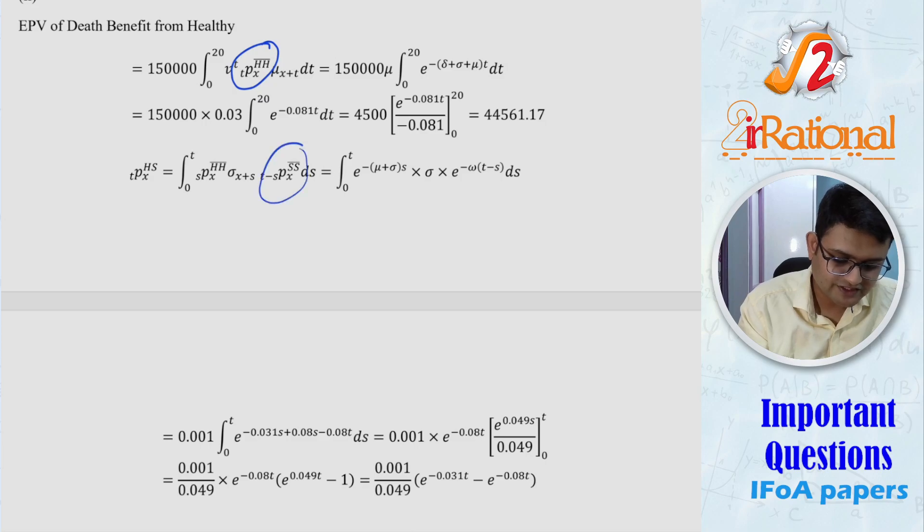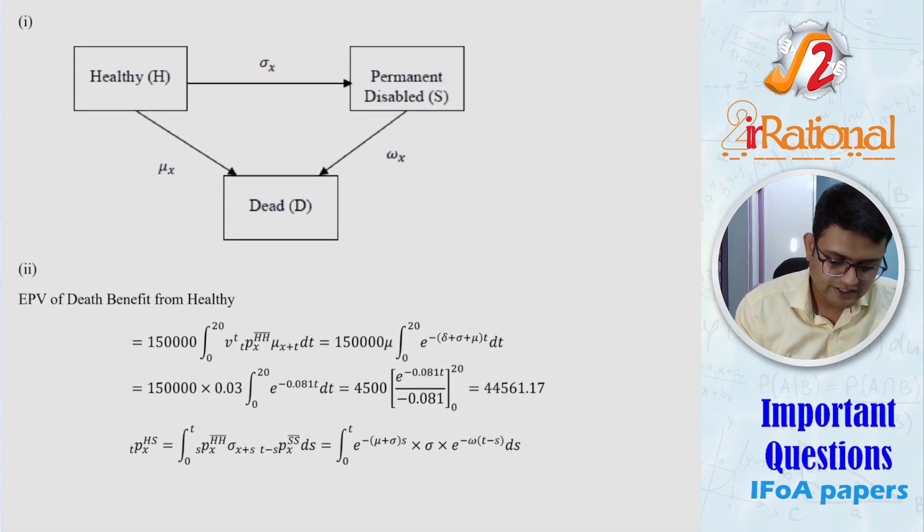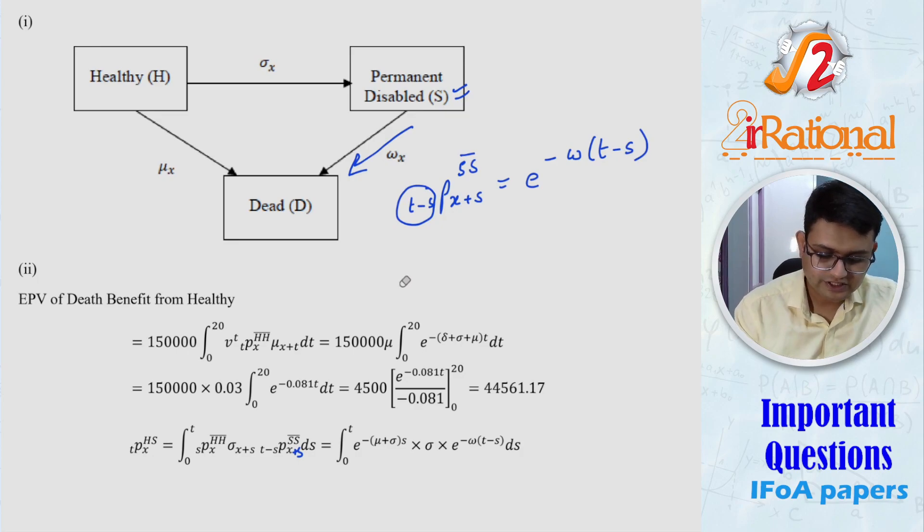Now because we have hh bar, because we have ss bar, these values can be interpreted very easily that it will be e raised to minus of any transition that is going out from that state. So from healthy, we have sigma as well as mu that is moving out. So it will be e raised to minus mu plus sigma t or s, whatever it might be. Delta comes from V, that is discounting factor. When we are talking about going out from s state, that means the t minus s p x plus s. This should be x plus s. I missed plus s. And then ss bar would be e raised to minus all the decrements that are going out of the state. There is only one decrement going out, that is omega. And the time that we are talking about is t minus s. So I hope this was clear.